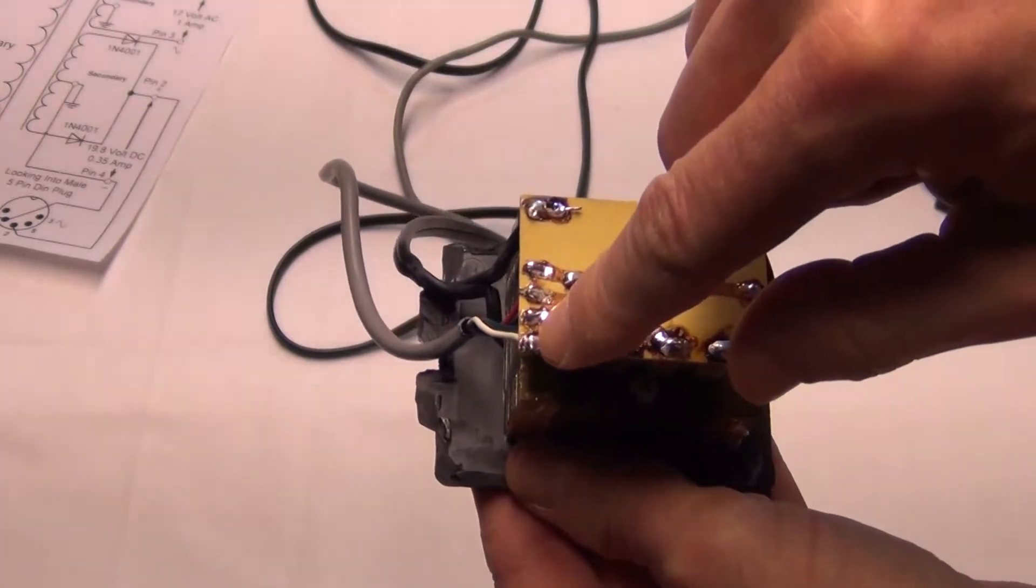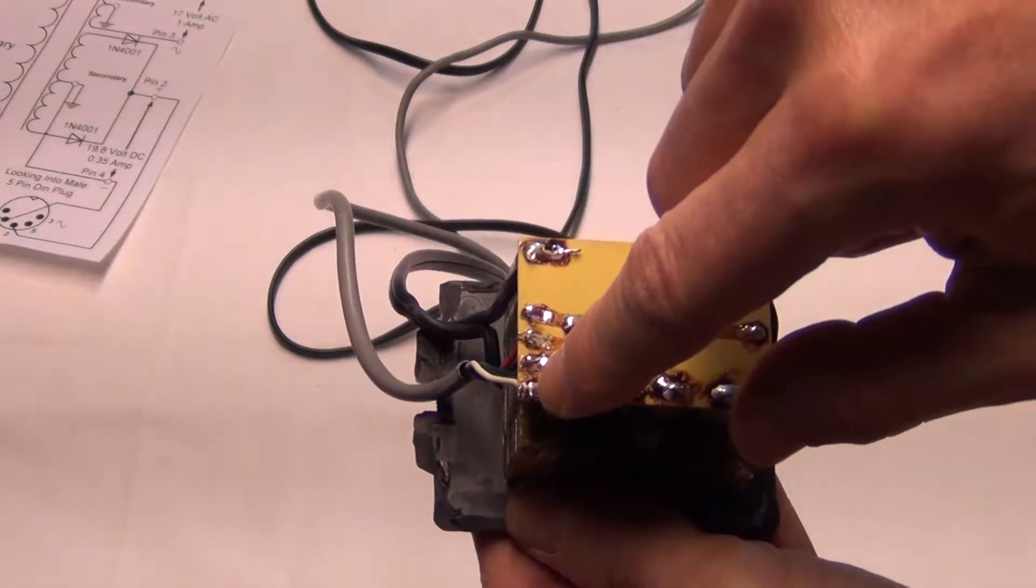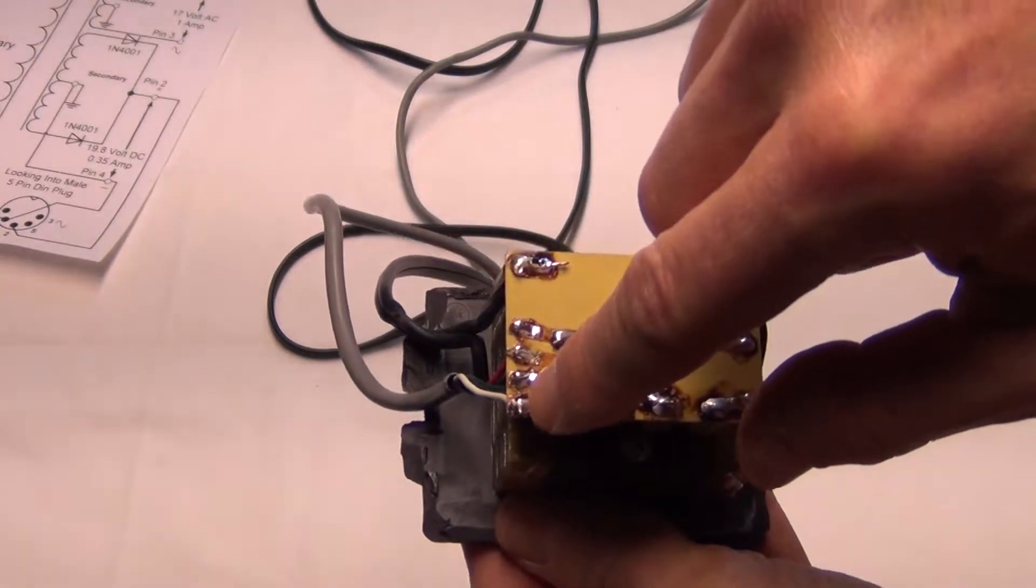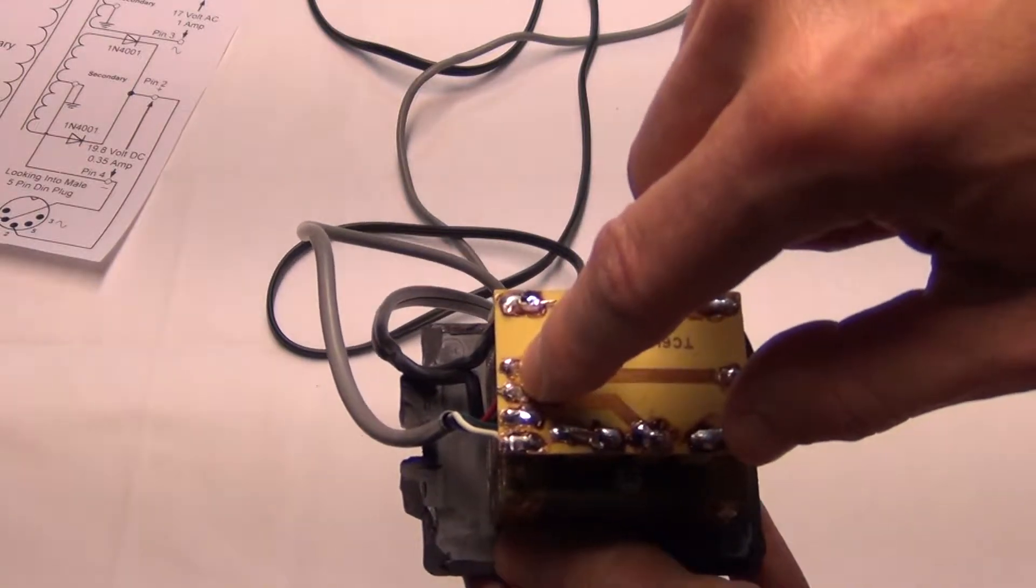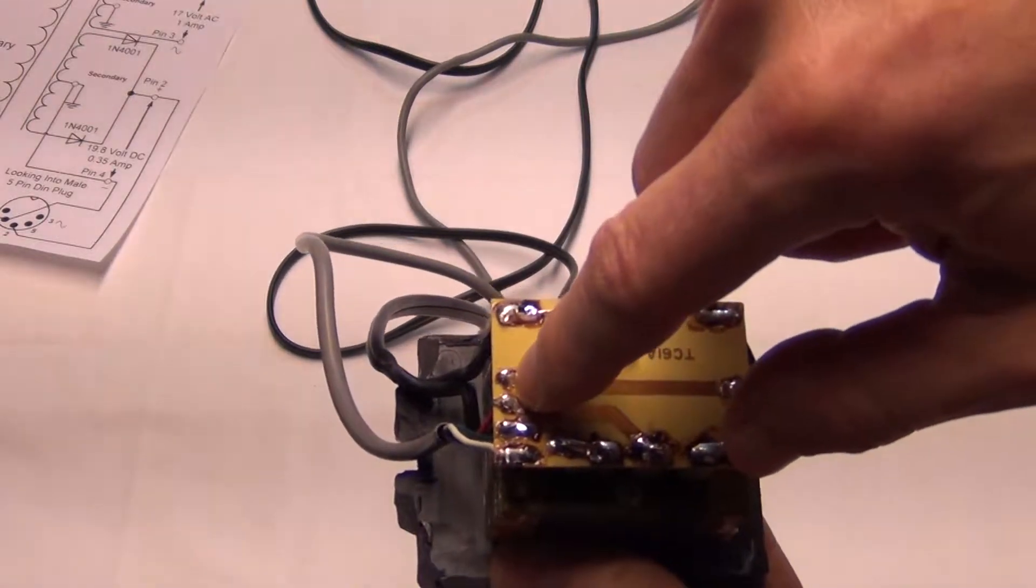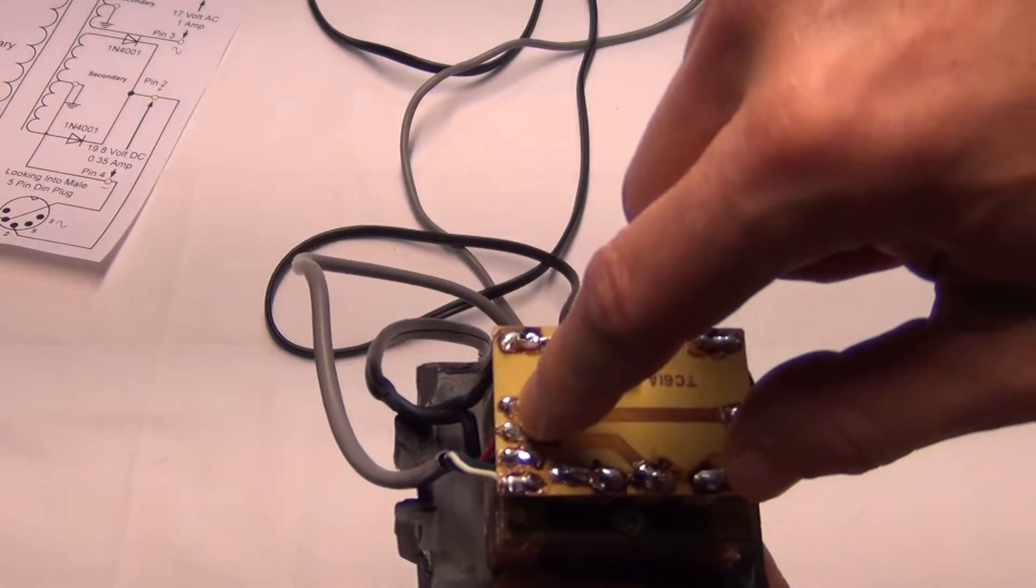Now this appears to be the AC part of the circuit, which is the 17 volts AC. And then these two here are the DC part of the circuit, the 19.8 volts.